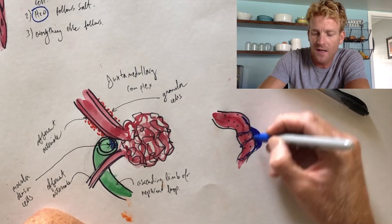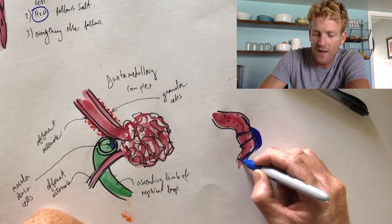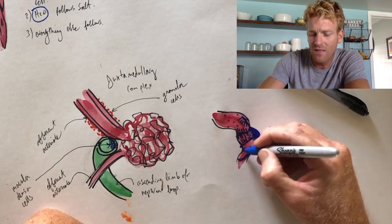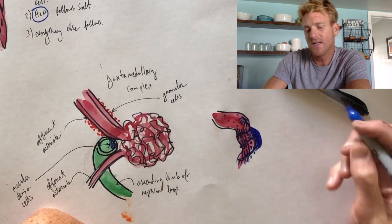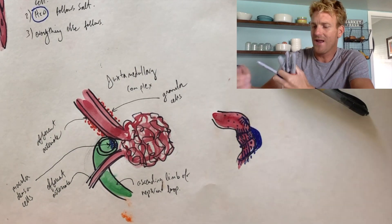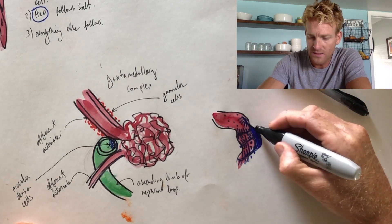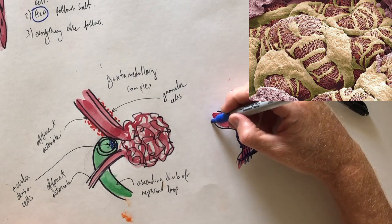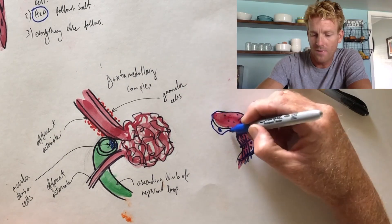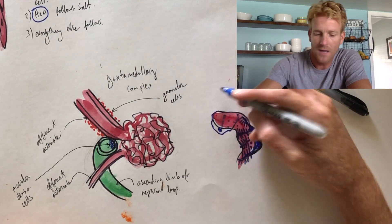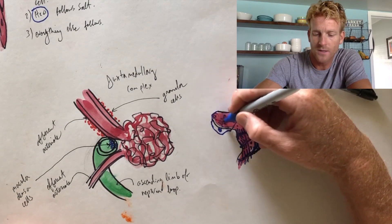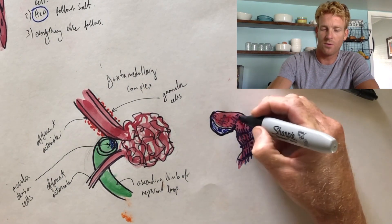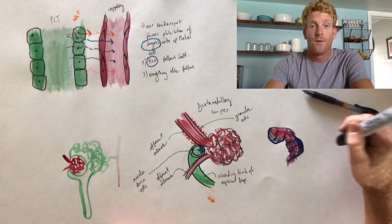This cell wraps around the capillary with little arms and has appendages that act like filters, catching any proteins that leak through the capillary and returning them to the circulatory system. This cell is called a podocyte, and its job is to catch all proteins leaked out of the glomerular capillaries and return them to circulation. These podocytes are distributed all along the capillaries, wrapping their appendages around them. That's it — thanks!